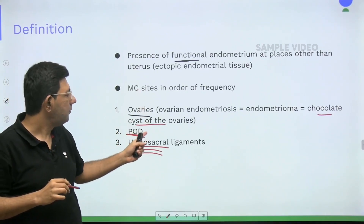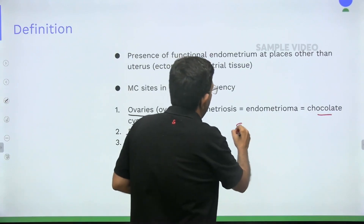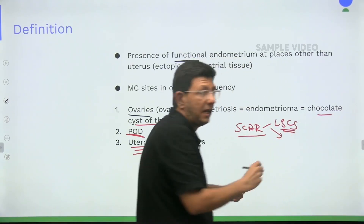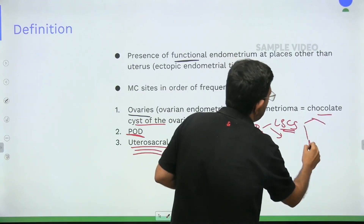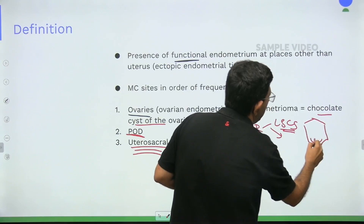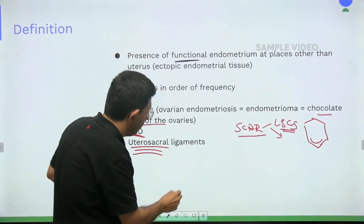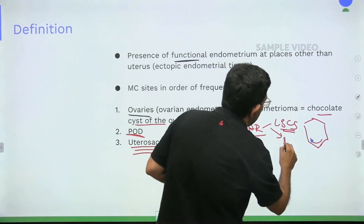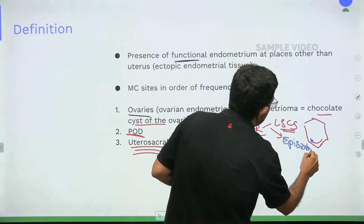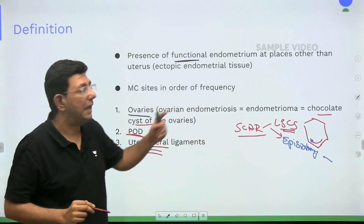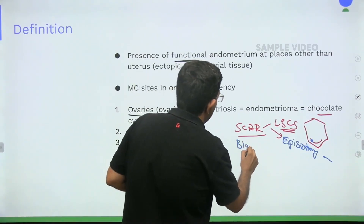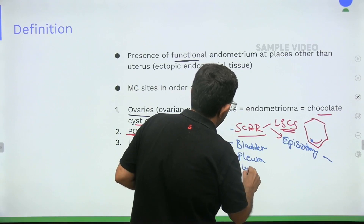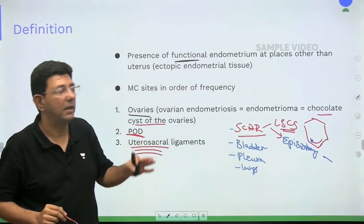The three most common sites are ovaries, pouch of Douglas, and uterosacral ligament. The rare sites include scar endometriosis — the scar of LSCS surgery on the skin — where an endometriotic nodule can be found. The episiotomy scar on the perineum is another rare site. Other rare sites are the urinary bladder, pleura, and lungs. Essentially, endometriosis can be found anywhere.